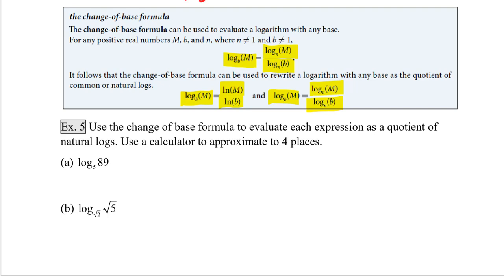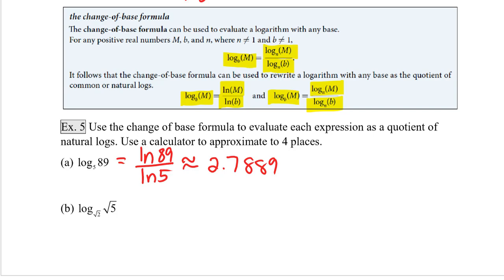Example five: use the change of base formula to evaluate each expression as a quotient of natural logs, then use a calculator to approximate to four decimal places. Log base five of 89 is the same as the natural log of 89 divided by the natural log of five, which gives approximately 2.7889. Then log base square root of two of square root of five becomes the natural log of the square root of five divided by the natural log of the square root of two, which is approximately 2.3219.